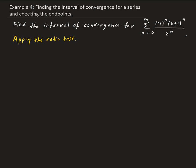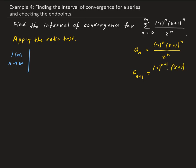We need to take the limit as n goes to infinity of the ratio of the (n+1)th term and the nth term. So let's identify the nth term: that's going to be (-1)^n times (x+1)^n all over 2^n. And then the (n+1)th term will be (-1)^(n+1) times (x+1)^(n+1) all over 2^(n+1).